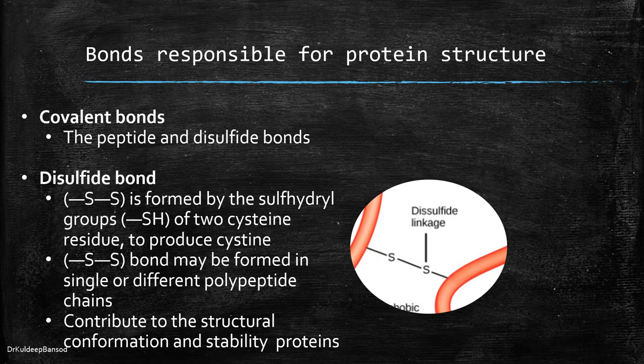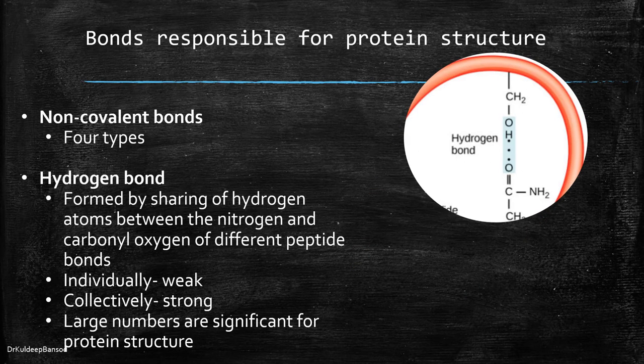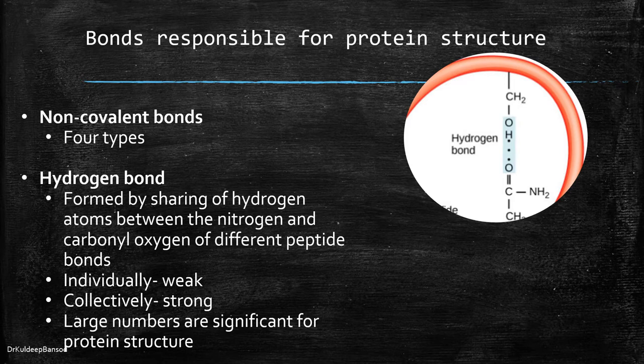Let's see what are the non-covalent bonds. There are four types of non-covalent bonds. First is hydrogen bonds. These form by sharing of hydrogen atoms between the nitrogen and carbonyl oxygen of different peptide bonds. Each hydrogen bond is weak, but collectively they are strong. A large number of hydrogen bonds significantly contribute to the protein structure.